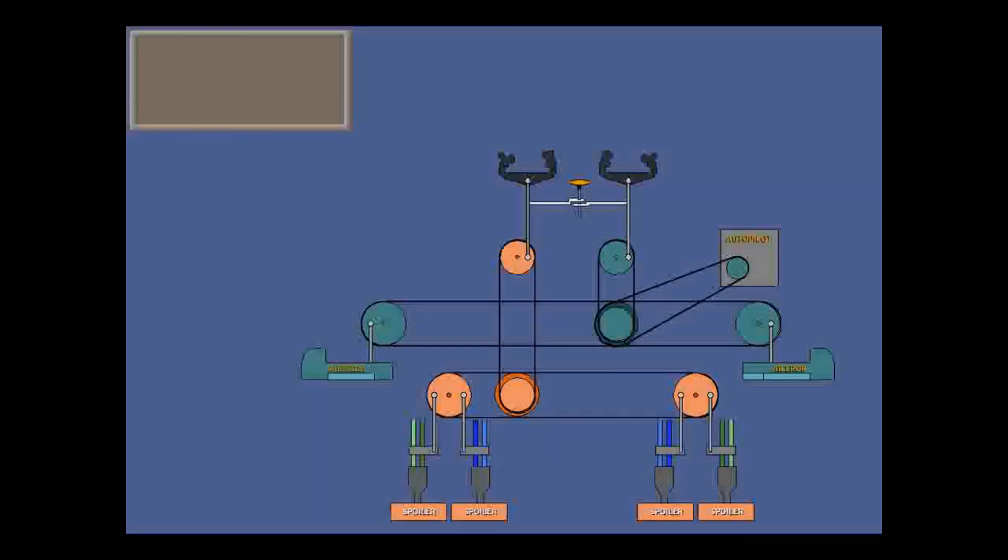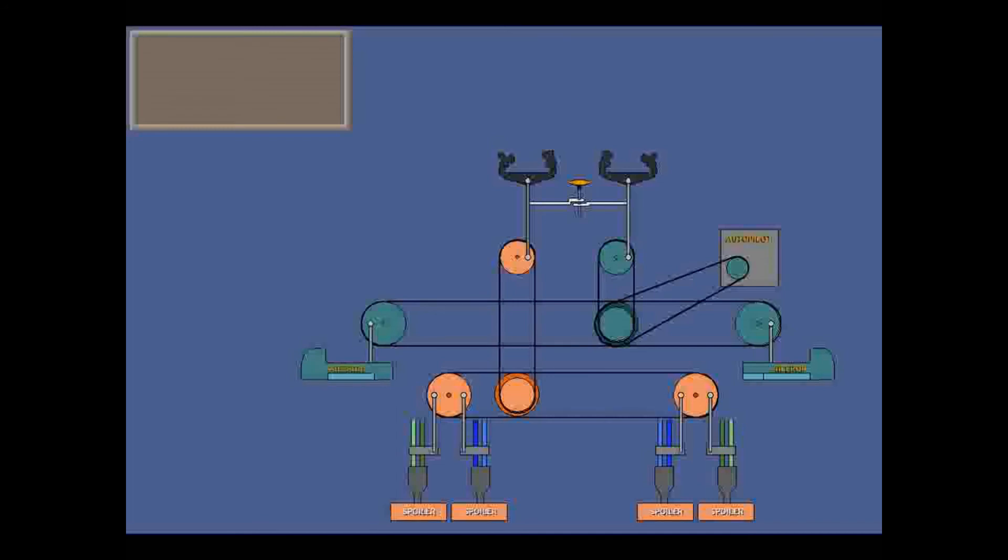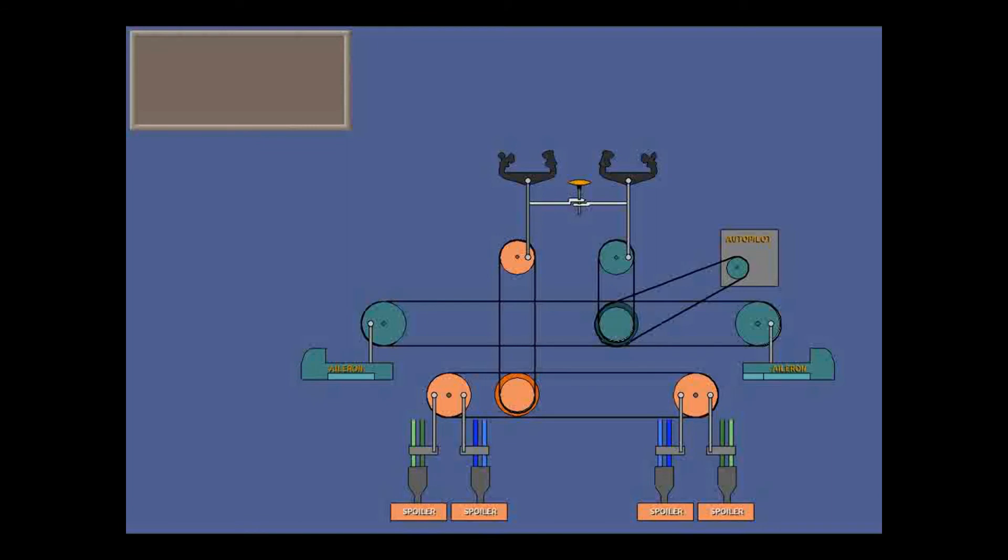If there is a jam in the left or right control circuit, pulling and twisting the roll disconnect handle 90 degrees separates the two sides of the roll control system. Touch the roll disconnect handle.